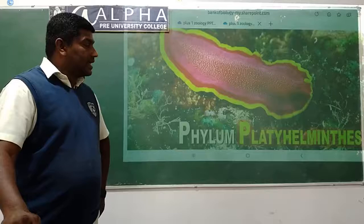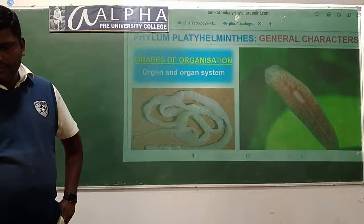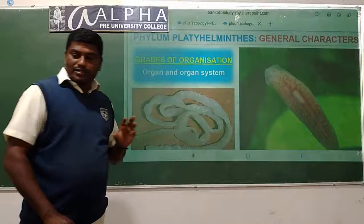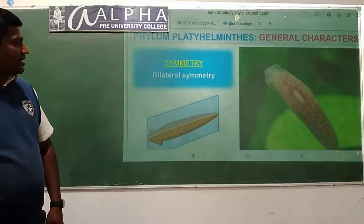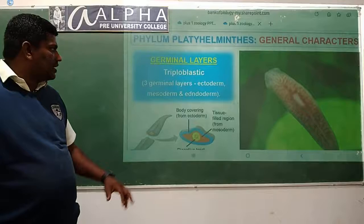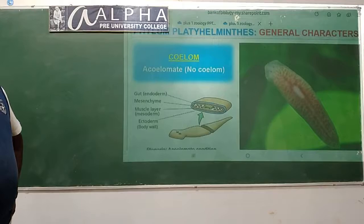The next phylum is Platyhelminthes, commonly called flatworms. General characteristics of phylum Platyhelminthes: they show organ and organ system level organization. They are bilaterally symmetrical - example Planaria. They are triploblastic animals containing three germ layers: ectoderm, mesoderm, and endoderm. They are acoelomates, meaning they do not contain a coelomic cavity.